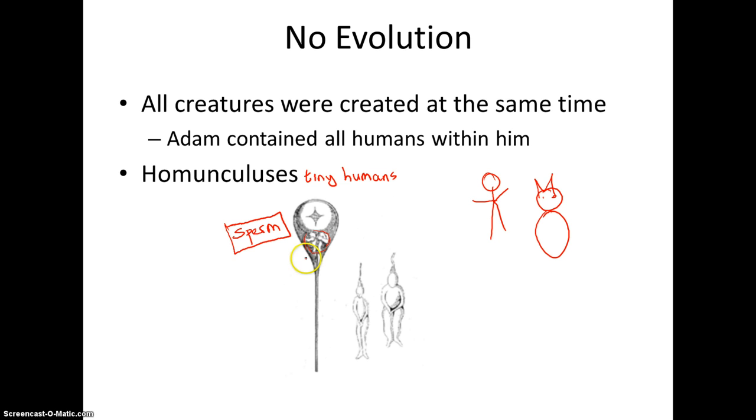And what preformation stated is that these homunculuses, these tiny humans, were transferred from Adam into Eve in which they developed and continued to grow. And then once they came out of the mom's stomach, they continued to grow more.